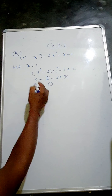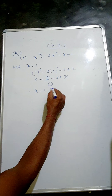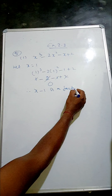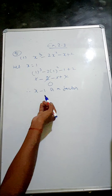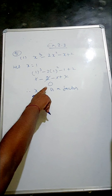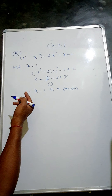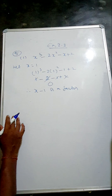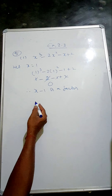Therefore, x equals 1 means we can write x minus 1 is a factor. Note: if it's plus 1, we take x minus 1 as a factor; if it's minus 1, we take x plus 1 as a factor. If the remainder is not 0, you have to try minus 1, then 2, minus 2, and so on. Here we already got 0, so that's done. Now we'll divide.